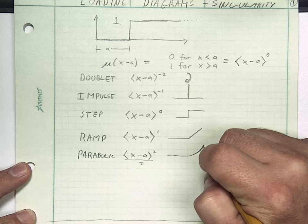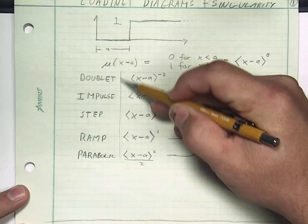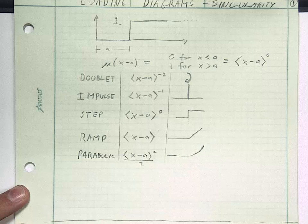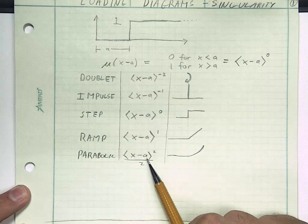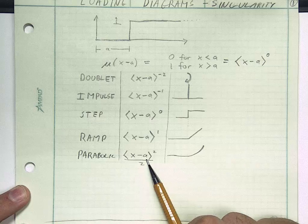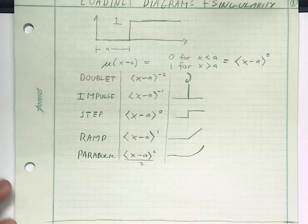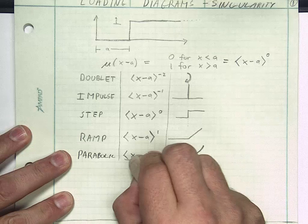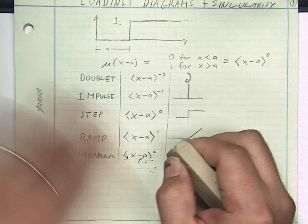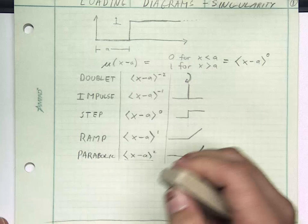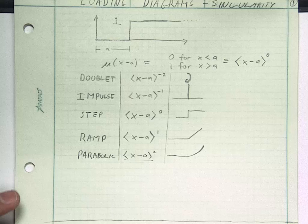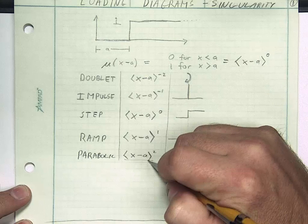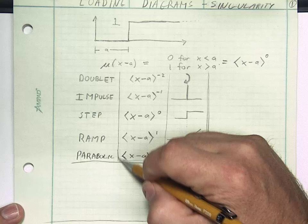Below the ramp, let's do one more. It's going to be the parabolic, and it's going to look like this. At a it's going to begin a parabola, a parabolic shape occurring right there at a. So it turns out there is a relationship between these. It's probably most easy to see between the ramp and the parabolic. This formula for the parabolic: x minus a squared.